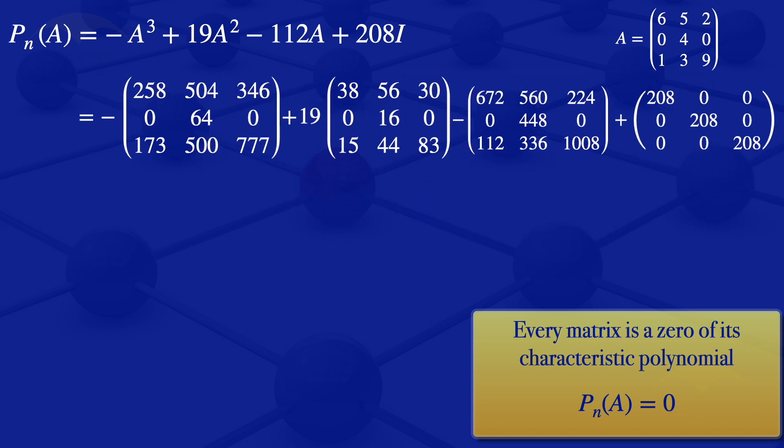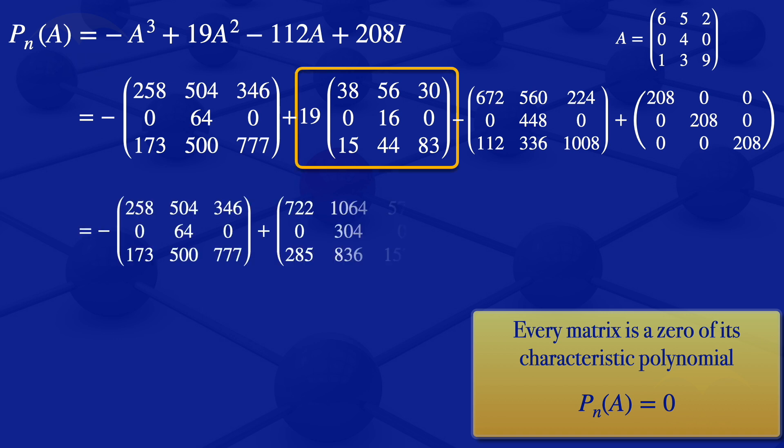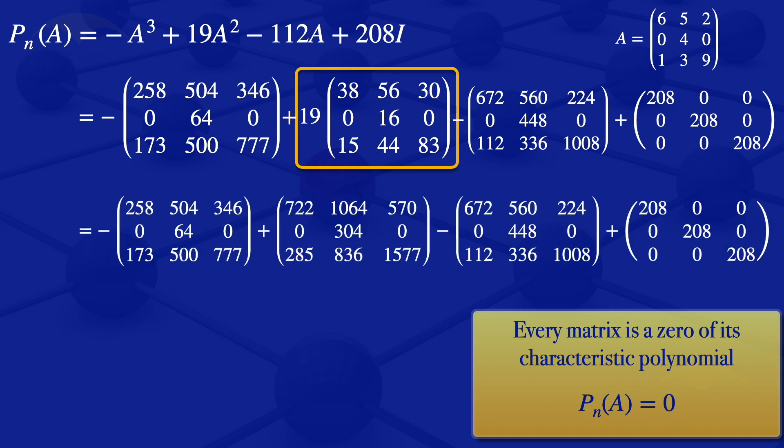We multiply 19 times A squared throughout and get: 722, 1064, 570, 0, 304, 0, 285, 836, 1577.